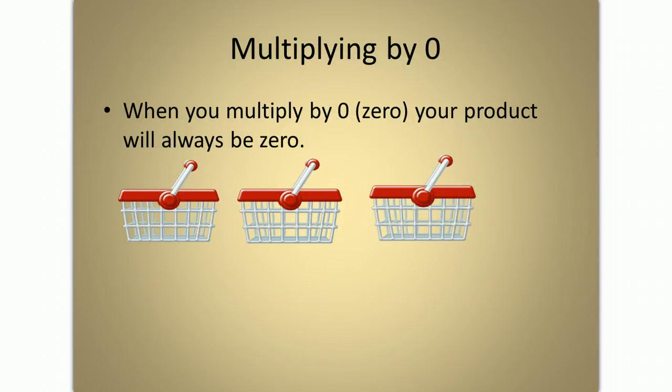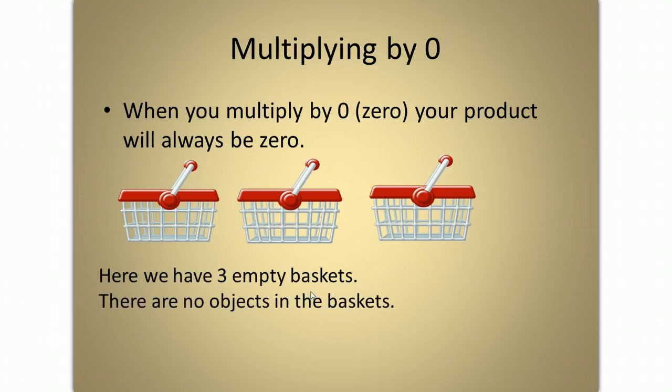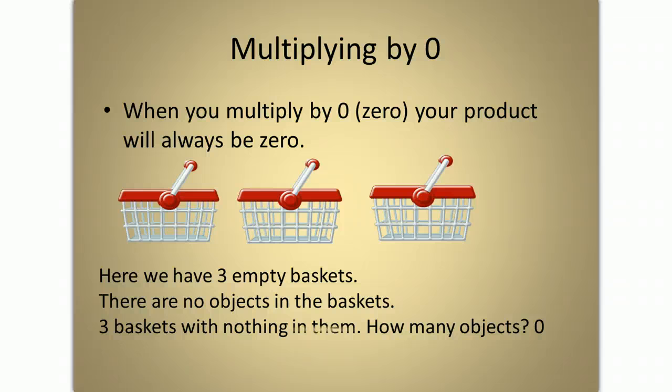Here we have three empty baskets. There are three baskets, but they are empty. There are no objects in them. Three baskets with nothing in them. How many objects? 0. 3 times 0 equals 0.